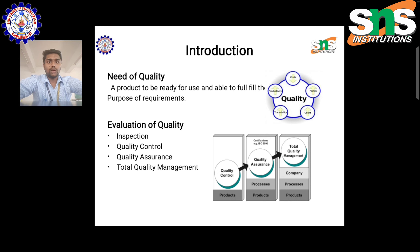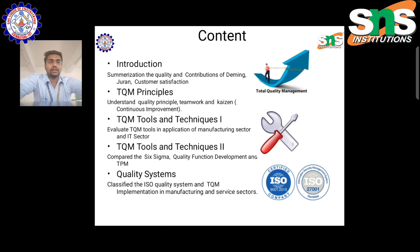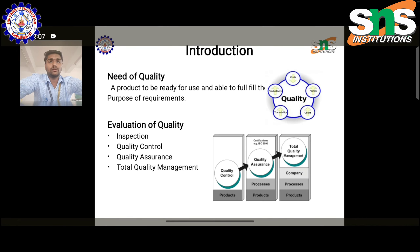In total quality management, certain tools and techniques are discussed. First, the principles include Timor, Kaizen, and Continuous Improvement. The TQM tools include evaluation process, PDCA cycle, and IT sector applications. The main tools currently established in industry are Six Sigma, quality function deployment, and total productive maintenance (TPM). The final content covers quality systems, classification of ISO standards, environmental impact factor standards, and manufacturing and service sectors following rules and regulations set by the government — this is the quality and quality assurance component.